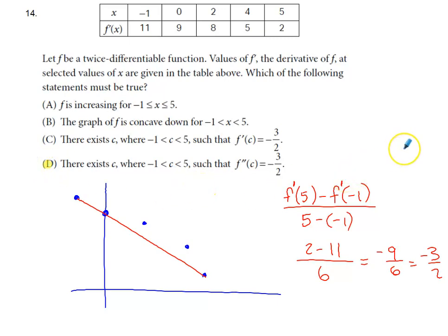We are going with option d. I'd be concerned that we might choose option c just because we're used to applying the mean value theorem going from f to f prime. In this case, we're going from f prime to f double prime, which is why our conclusion is d and not c. We're dealing with f prime values here. We are not dealing with function values. Thank you.